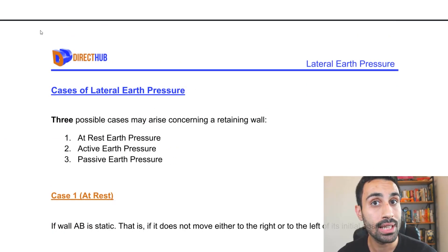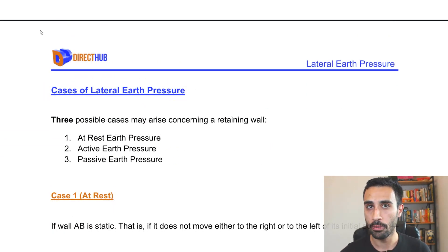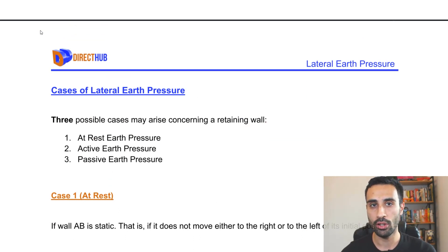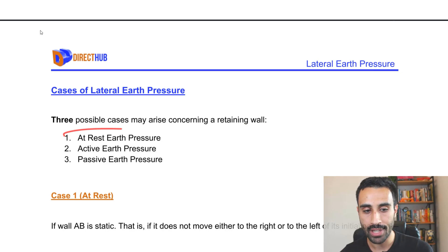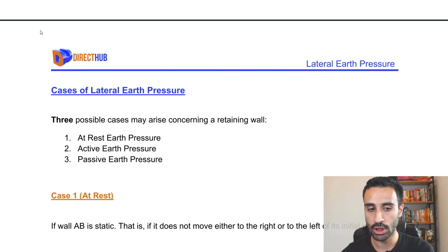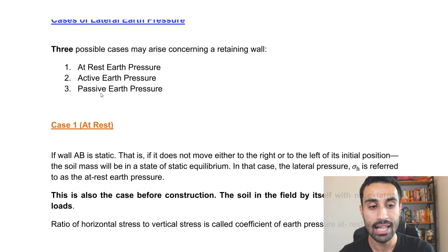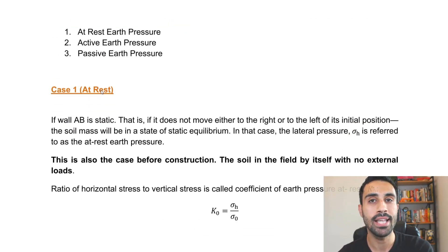Now let's look at the three cases of lateral earth pressure. We have three possible cases that may arise when dealing with a retaining wall: Case 1 is the at-rest earth pressure, Case 2 is the active earth pressure, and Case 3 is the passive earth pressure. Let's break these down one by one.